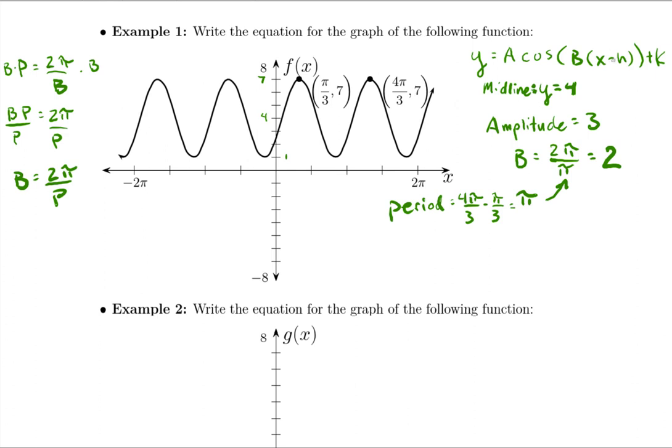And then lastly, h is our shift. And since it's clear that normally cosine's maximum is at zero, but instead it's over at pi over three, so we've shifted to the right pi over three. So we're going to say minus pi over three in our equation. So to put it all together, this will be y equals three times the cosine of two times x minus pi over three plus four.